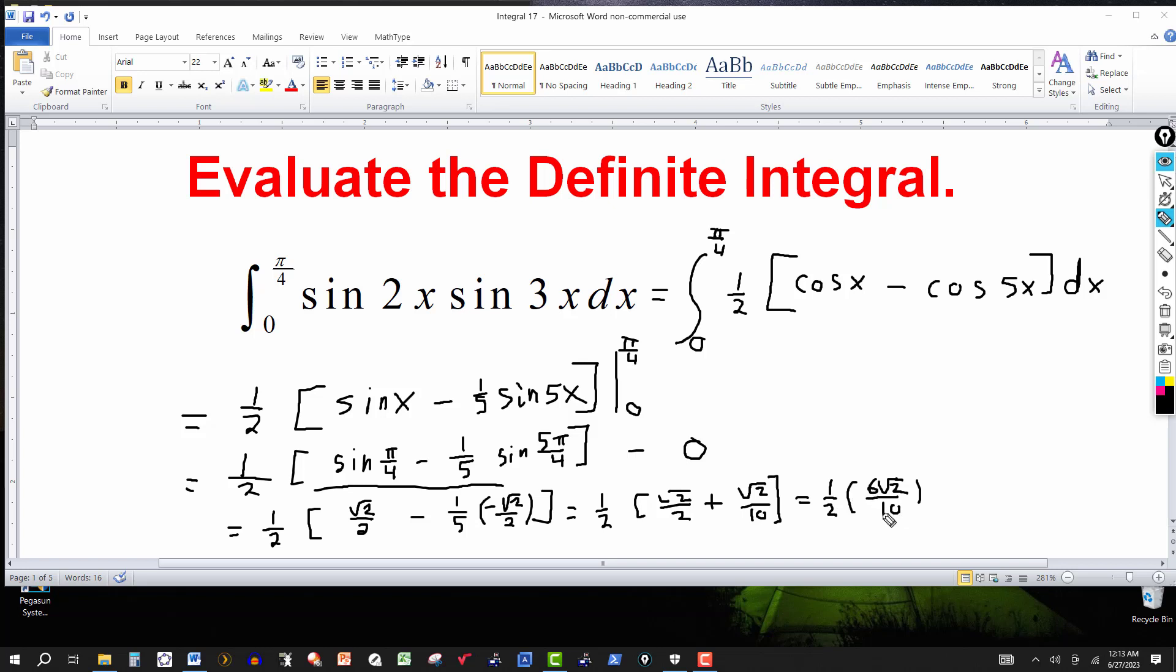And you can reduce here. You just multiply by one-half here. That'll give me 3 radical 2 over 10. This is the value of the definite integral. Thanks for watching. We'll see you next time.